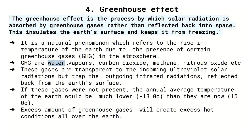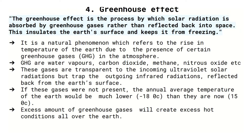The greenhouse gases are: water vapors, carbon dioxide, methane, and nitrous oxide. These gases are transparent to the incoming ultraviolet solar radiations but trap the outgoing infrared radiations, reflecting them back to the earth's surface.